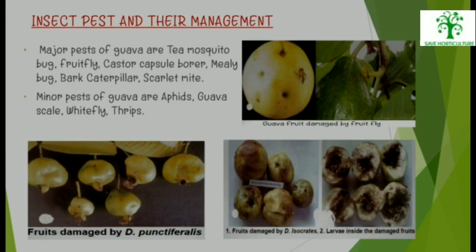Insect Pests and Their Management: Major pests of Guava are Temosutha, Fruit Fly, Castor Capsule Borer, Mealy Bug, Bark Caterpillar, and Scarlet Mite. Minor pests of Guava are Aphids, Guava Scale, White Fly, and Thrips.